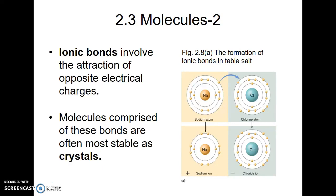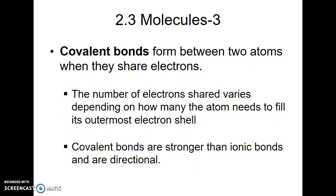Like table salt, most molecules made up of ionic bonds are stable in a crystal form. Moving on to covalent bonds — covalent bonds are going to be really important for understanding the next chapter when we talk about biological molecules. Covalent bonds are just types of bonds formed between two atoms where the electrons are shared, and covalent bonds are stronger than ionic bonds. The electrons are sometimes shared unevenly between atoms in the molecule.